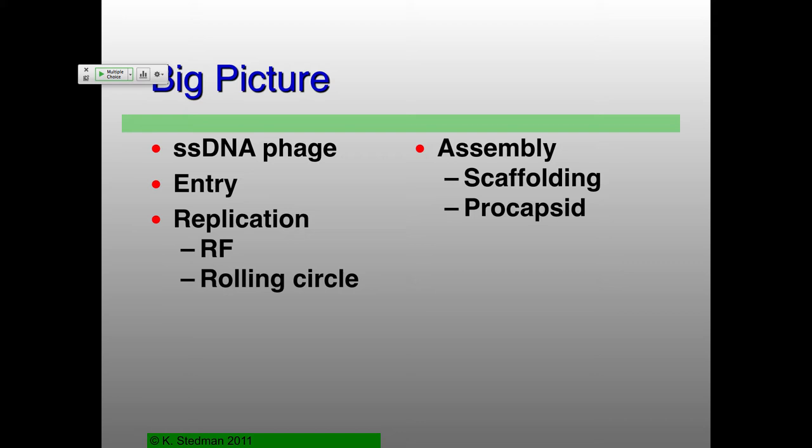Entry — this is relatively new. Just last year there was another publication that came out on entry for these microviruses. For the RNA viruses, they've got one specific vertex which is different. Well, these have 12 that are all the same. So how do you then go about having 12 being all the same, binding, and then getting entry to take place? Because they're also infecting E. coli, two membranes are actually relatively tough to get through.